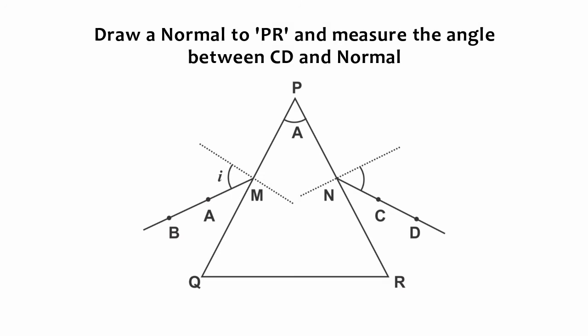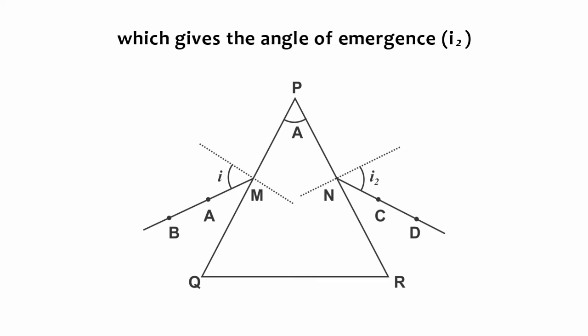Draw a normal to PR and measure the angle between C, D and the normal, which gives the angle of emergence, I2.